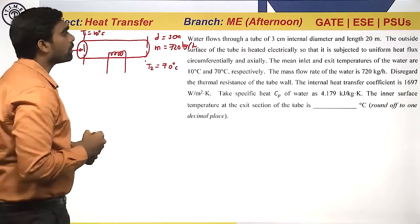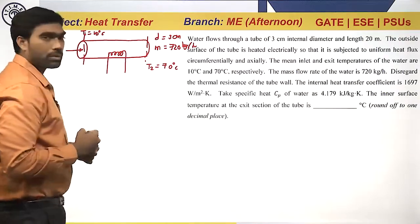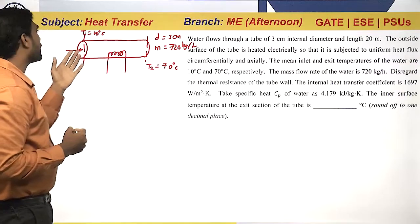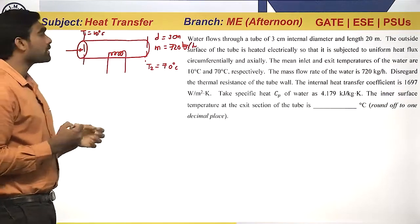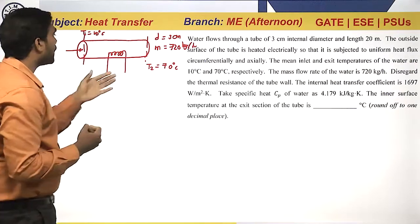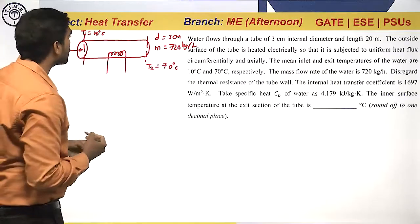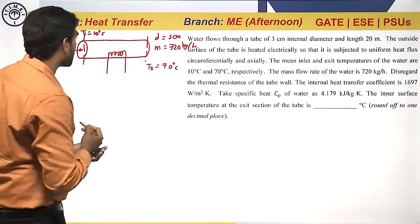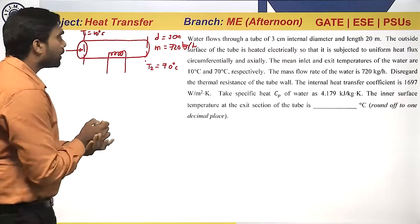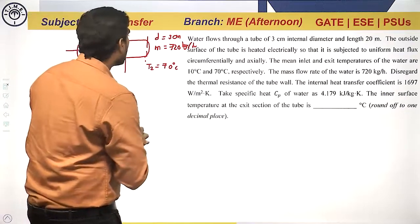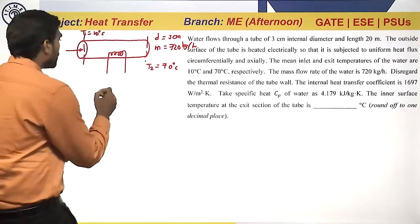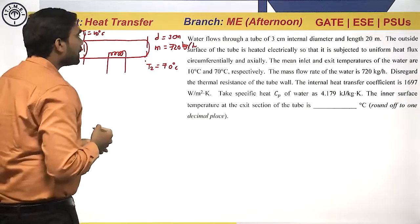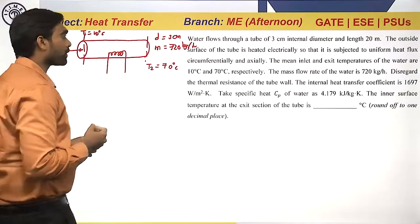During this process, this pipe is subjected to an electrical heating process. When water enters at the inlet at 10 degrees Celsius and is subjected to electrical heating, the temperature of the water increases to 70 degrees Celsius. We need to find, at the exit, the internal temperature of the pipe surface.